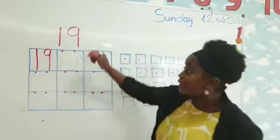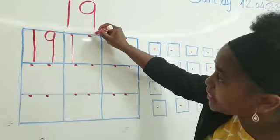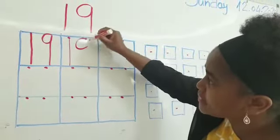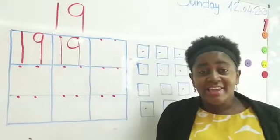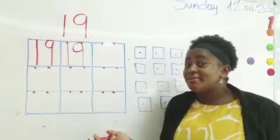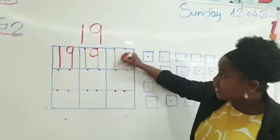First we write 1, up, down, and then we write number 9. Same circle, up, down. Can you see? It's very easy to write number 19. Just write 1, and 9.